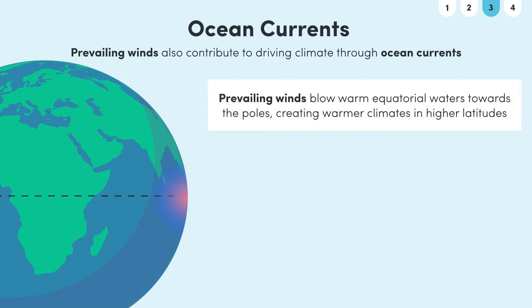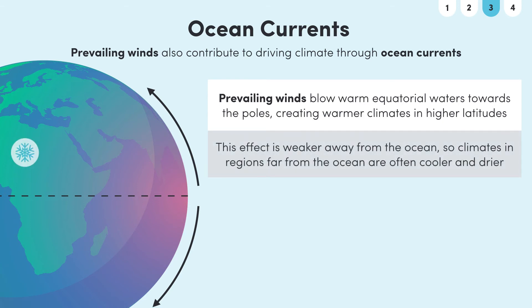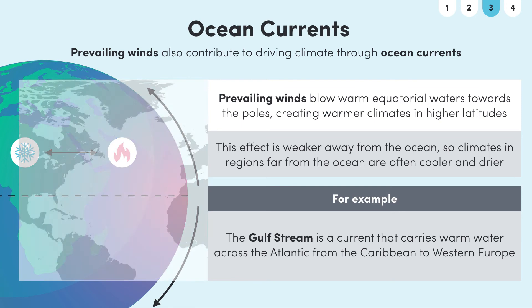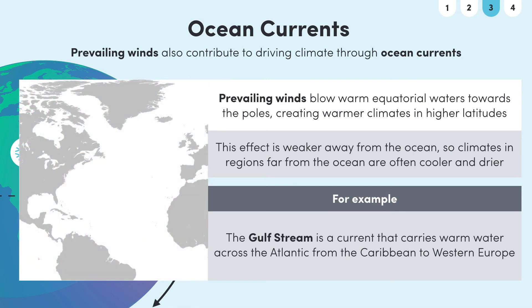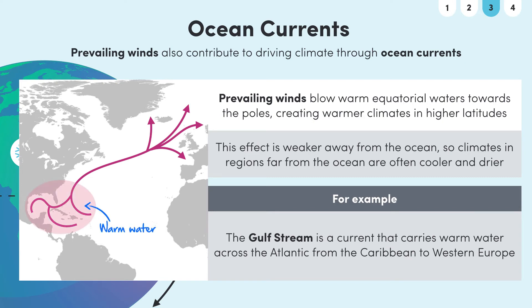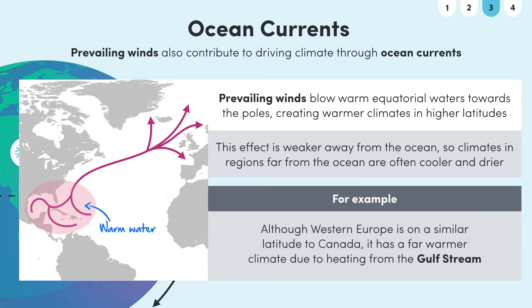Winds blow warm equatorial waters away from the equator to the poles, creating warmer climates in higher latitudes. This effect becomes weaker further away from the ocean, so climates in regions far from the ocean are often cooler and drier than coastal areas. An example of how ocean currents can influence climate is the Gulf Stream. This is a current that runs across the Atlantic from the Caribbean to Western Europe, carrying warm water. Although Western Europe is on a similar latitude to Canada, it has a far warmer climate due to heating from the Gulf Stream.